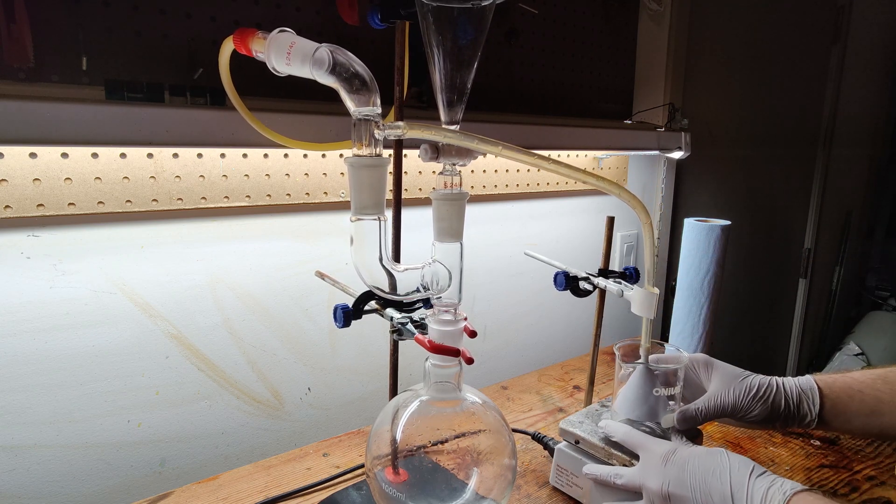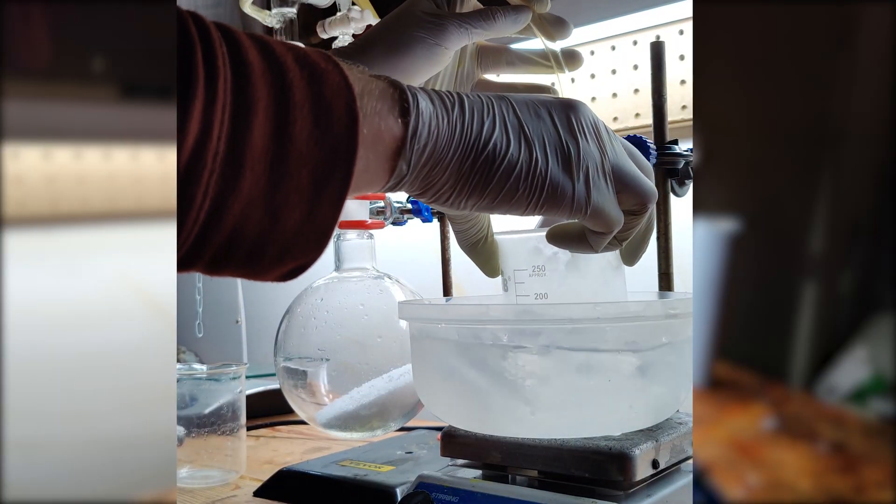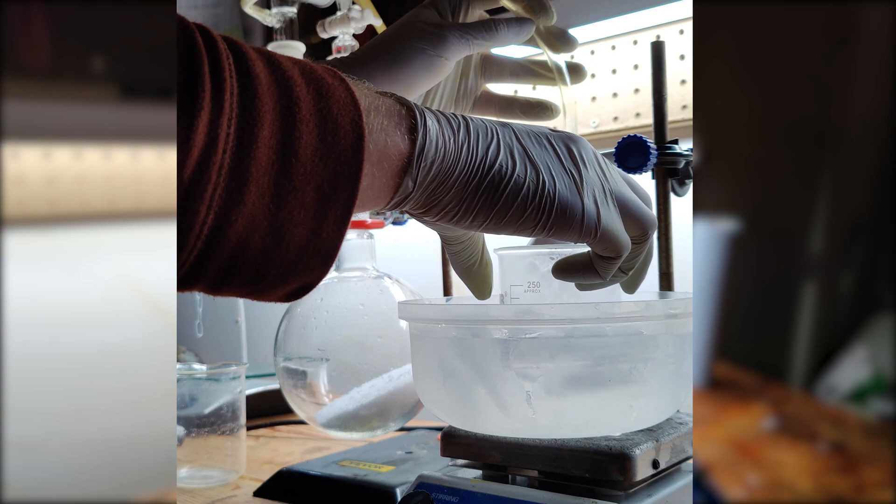I started by measuring out stoichiometric amounts of sodium hydroxide and ammonium sulfate. I added the ammonium sulfate to the round-bottom flask and placed my collection beaker in an ice bath.